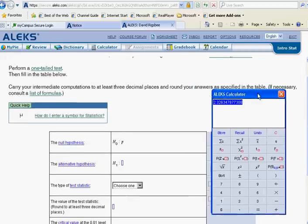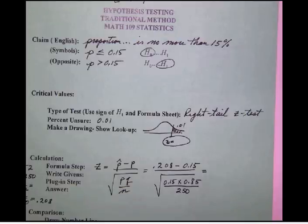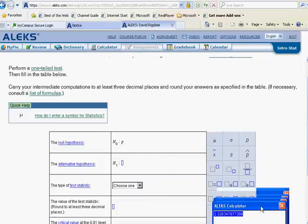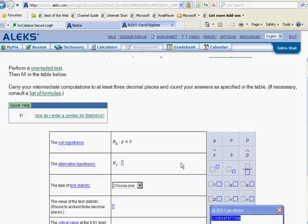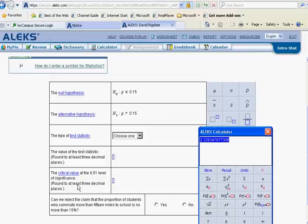Since it's a right tail test and since we want a z value, we can use the z button on our ALEKS calculator. That z button for 0.01 is going to give us 2.326. Now let's see what ALEKS is asking us for. Notice the null hypothesis - if we go back and take a look, we'll see our null hypothesis is p less than or equal to 0.15.